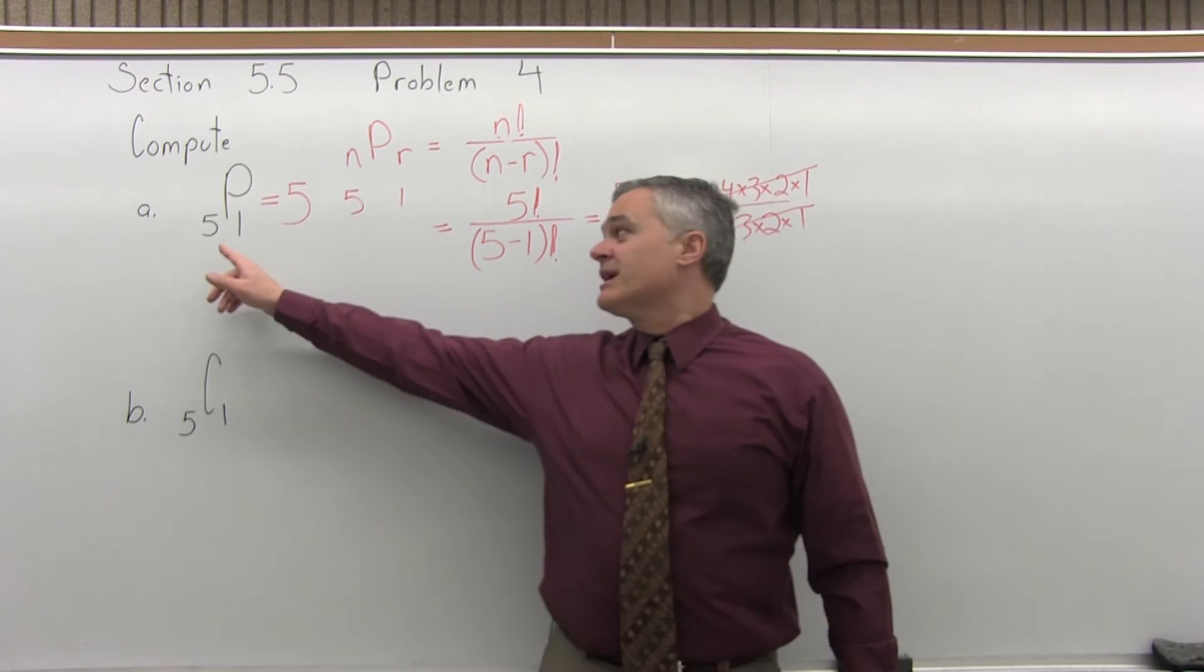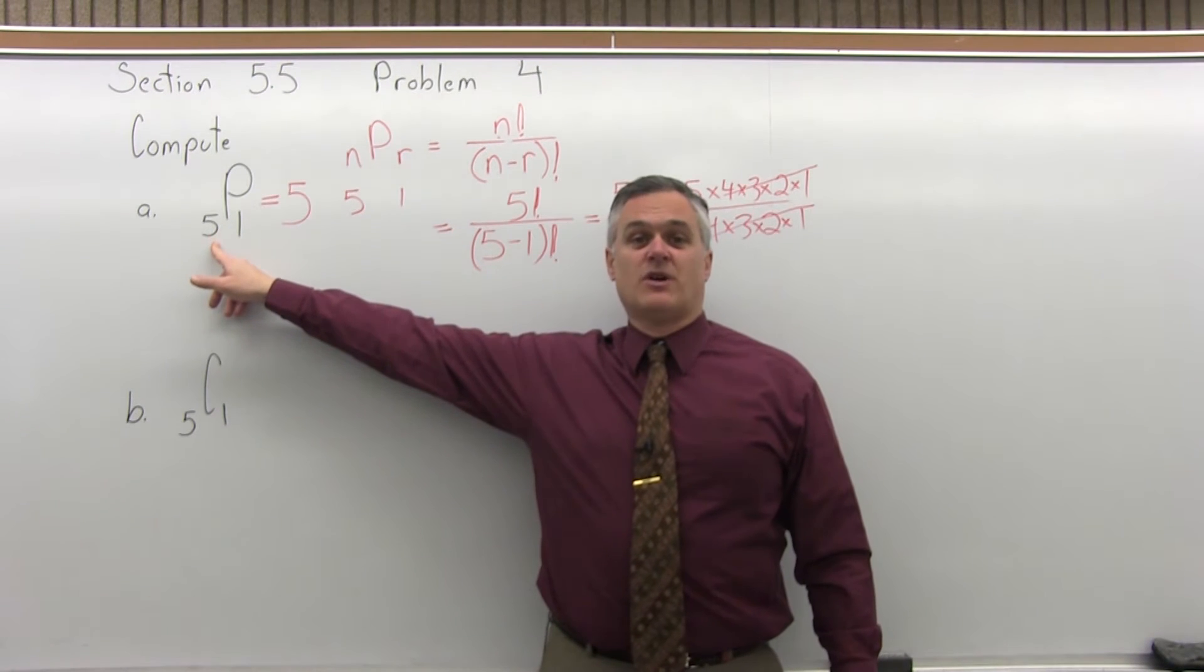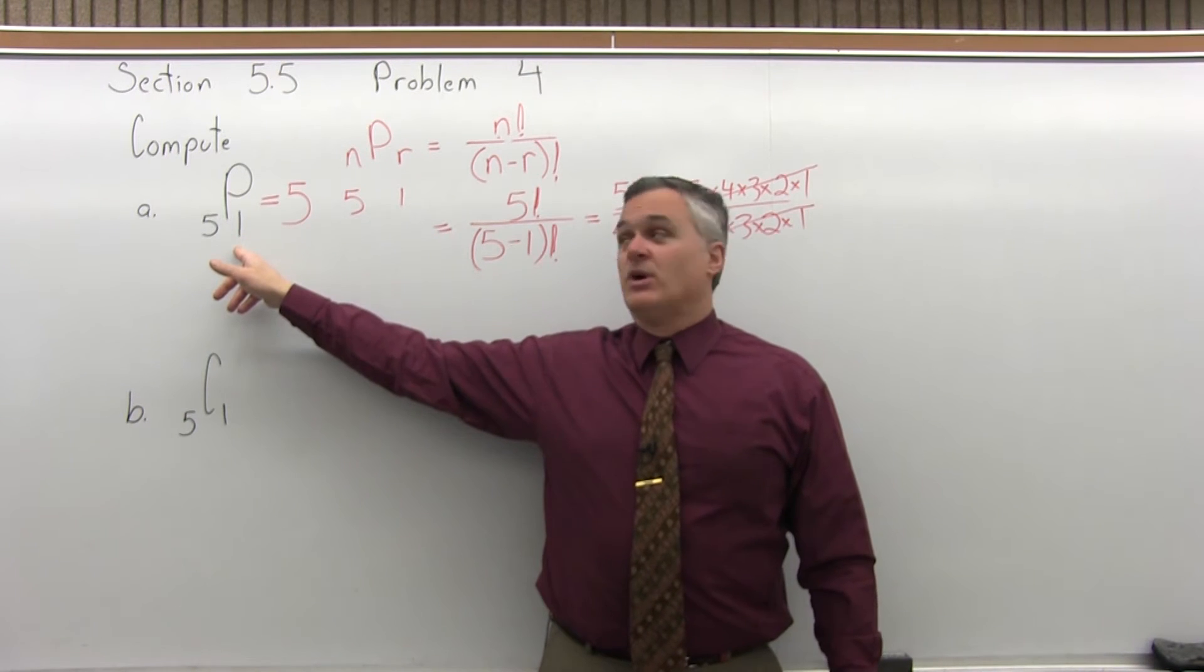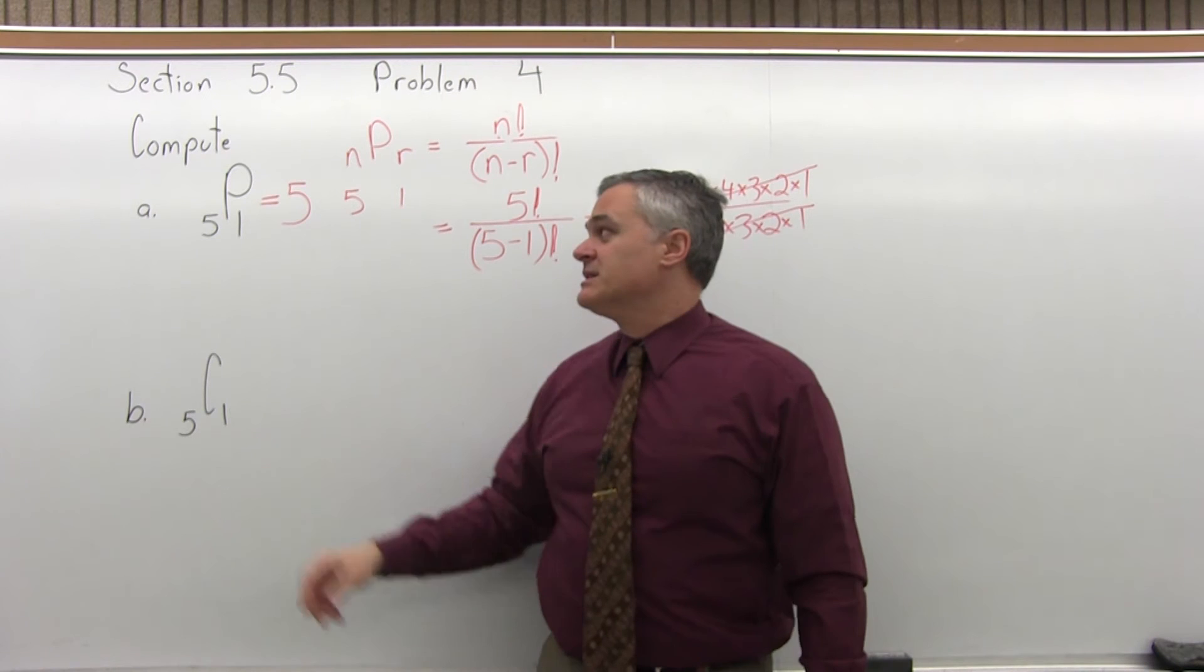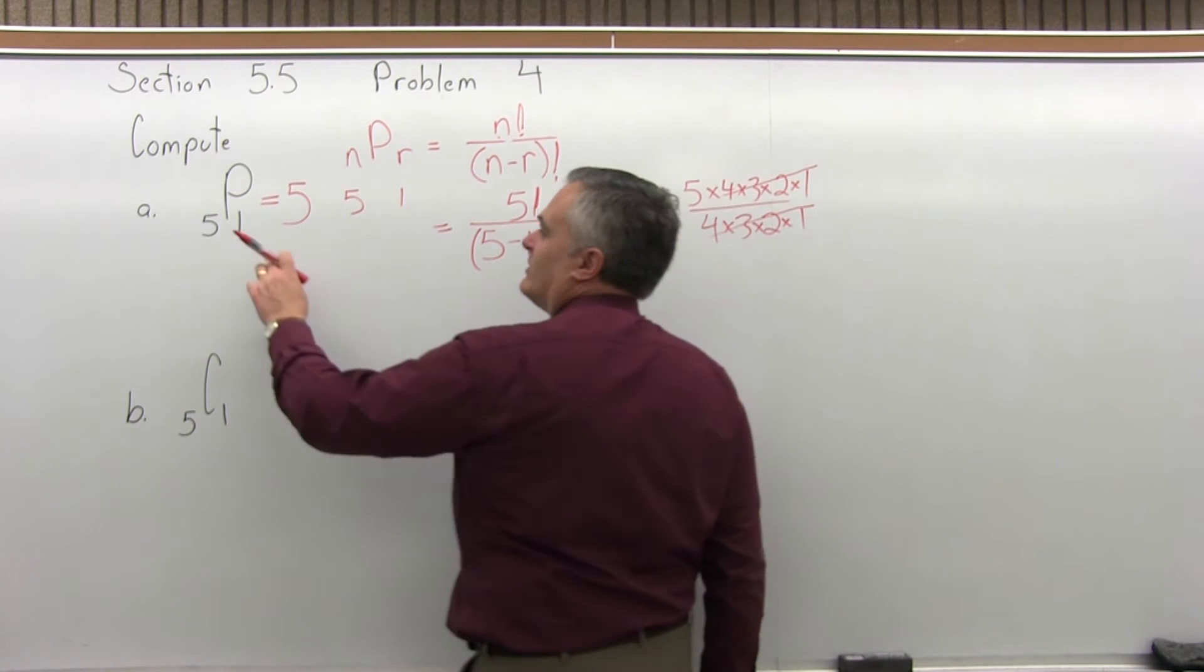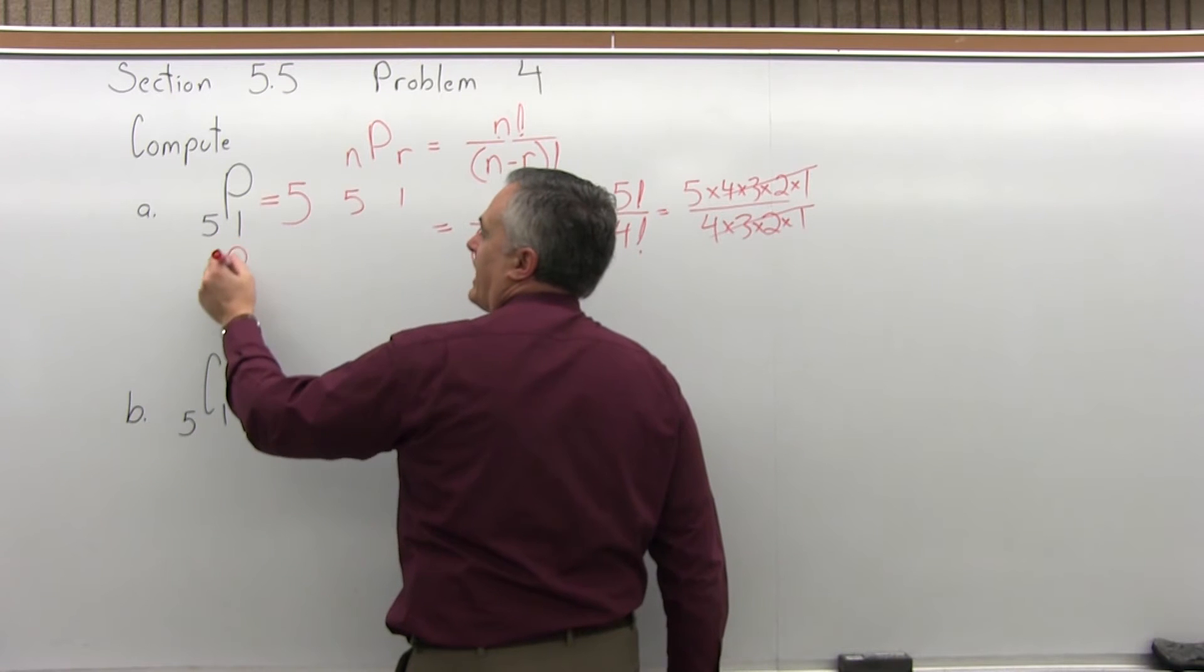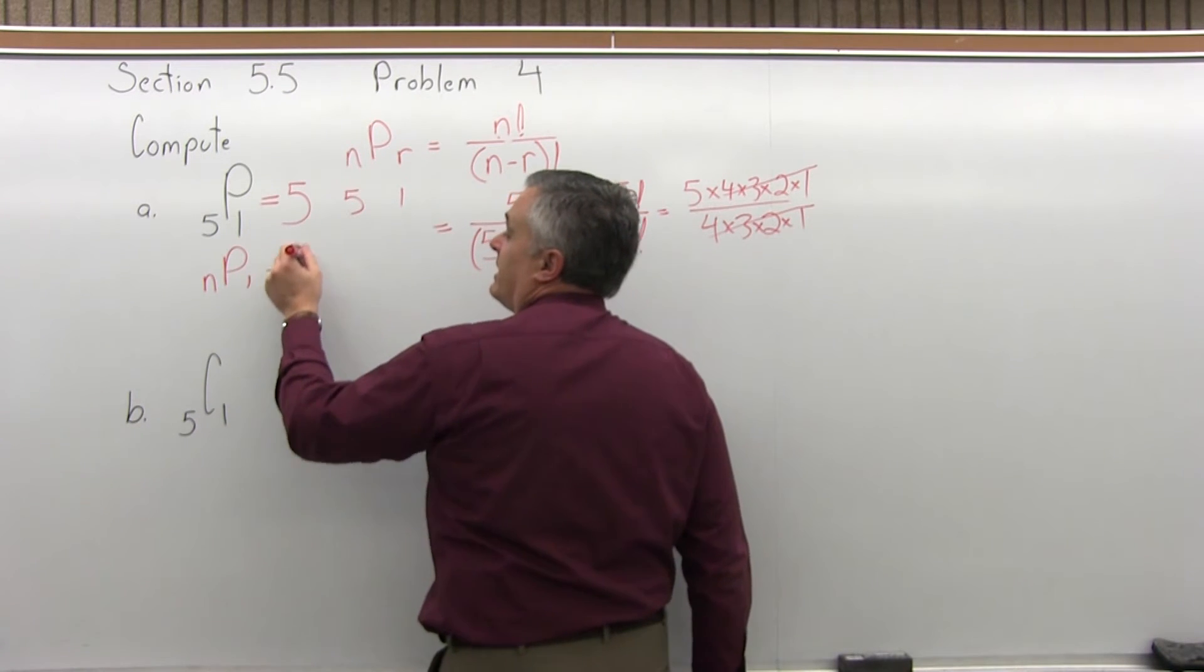So what that's telling us is if you have 5 things to choose from, there are 5 different ways you can choose 1. Well, the order doesn't matter. I mean, you're only choosing 1, and there's no repeats. In general, whenever the second number is 1, the answer is whatever the first number is. So n permutation 1 equals n.